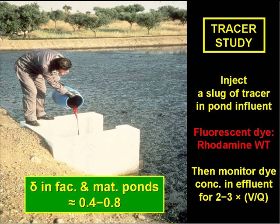With facultative and maturation ponds, we often find that delta is roughly between 0.4 and 0.8, that is, about halfway between plug flow and complete mixing, which is what you'd sort of expect.